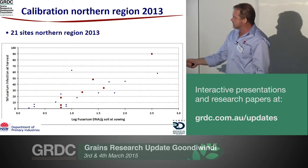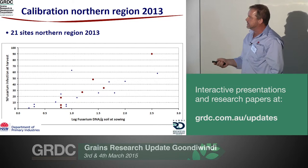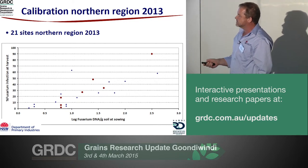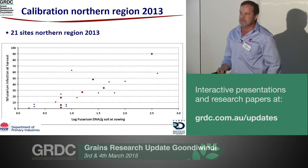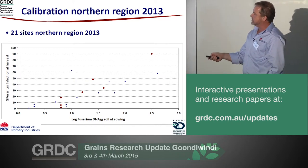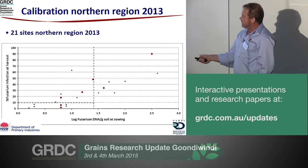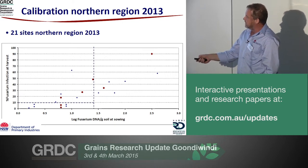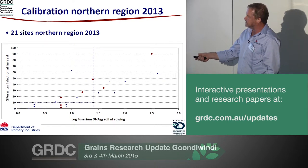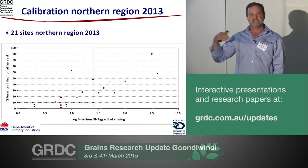Along the bottom is the log fusarium DNA number at sowing — this is punching cores across paddocks, 21 sites in 2013. On the vertical axis is the actual level of infection measured at harvest: what percentage of plants got infected with crown rot fungus. There's a pretty good relationship at the higher levels. When we put in our risk categories — low risk is below 1.4 on the log scale — we found cases predicted as low risk where we ended up with nearly 20-60% of plants infected. We call this a failure to warn — the test has given us the wrong answer.